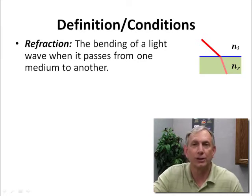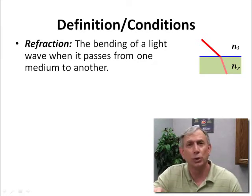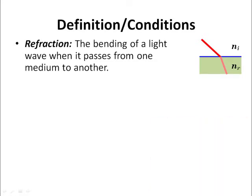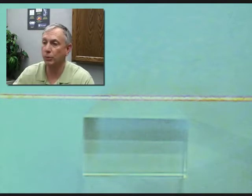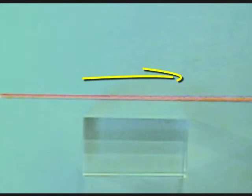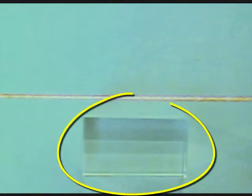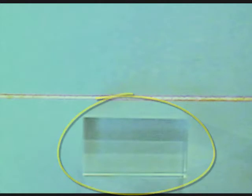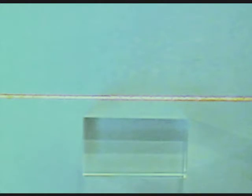Now that we've looked at this figure and defined refraction, let's look at a real-world example and go to the laboratory. What you see on the screen is an actual video shot in the Optech laboratory. You see a beam of light moving from left to right, and an optical grade plastic block. We're going to watch a technician insert this block into the beam of light and observe the effects.